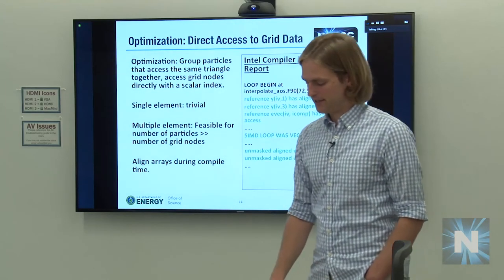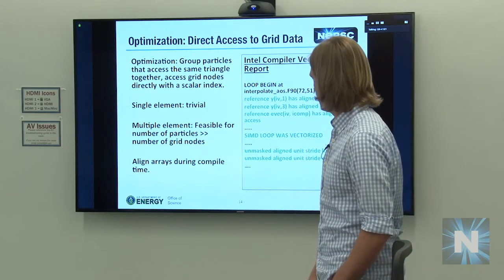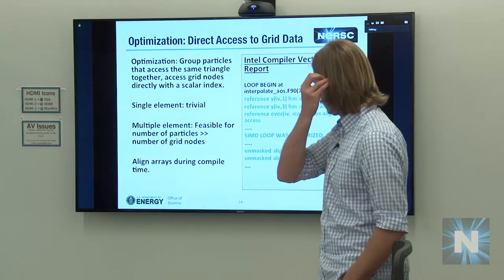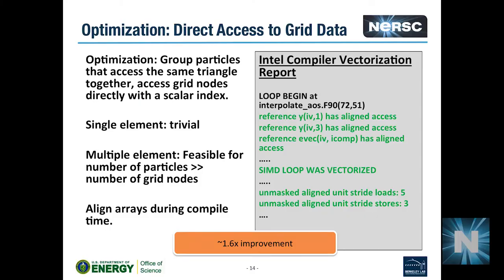We also added a compiler directive to align the arrays, which the compiler report confirmed as aligned accesses. This optimization gave something like 1.6x improvement to the whole code — about 3x to the interpolation kernel specifically — basically going from no vectorization benefit at all to close to the 4x that is possible on KNL.